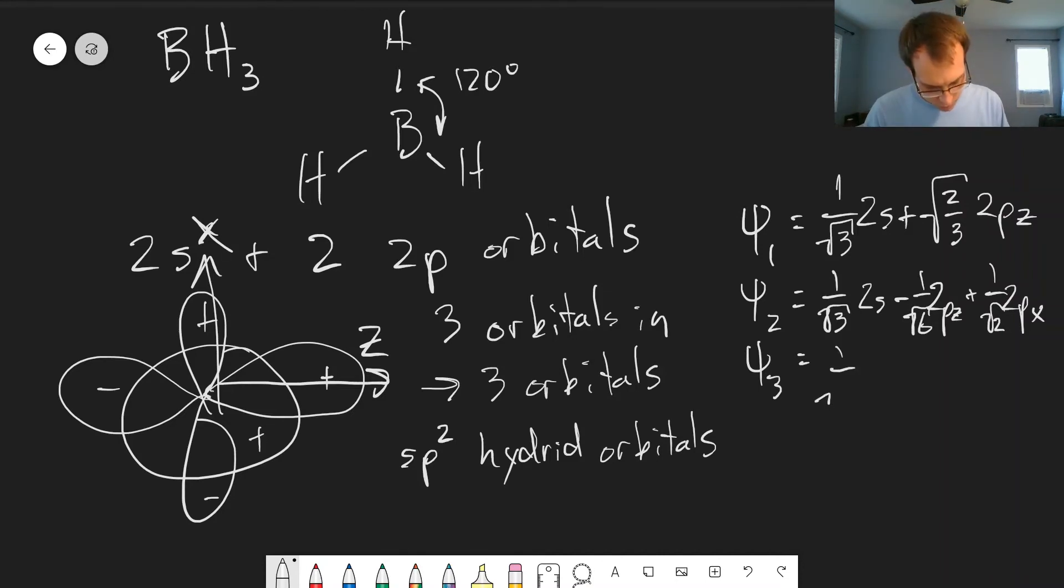And then we get 1 over square root of 3 of the 2s minus 1 over square root of 6 of the 2pz minus 1 over square root of 2 of the 2px. And what do these look like?